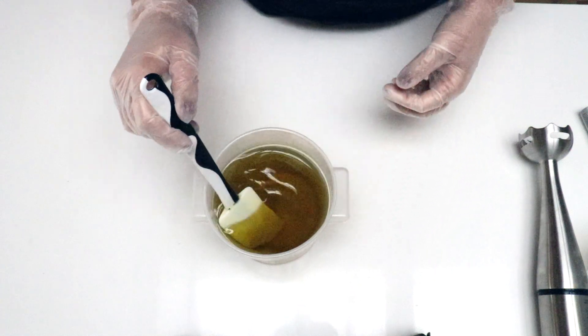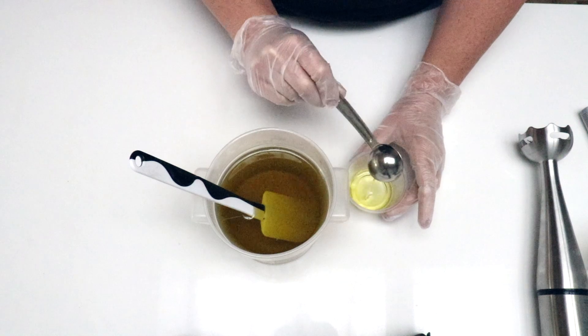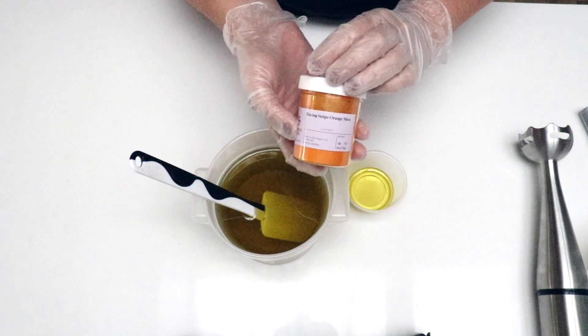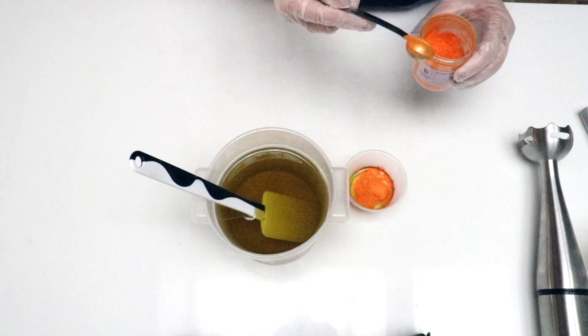I've melted my oils and I'll start by preparing the color. I like to use one tablespoon from my base oils but you can use any lightweight oil for this. Then I add one teaspoon of the Racing Stripe Orange mica and blend it well with a mini hand mixer.